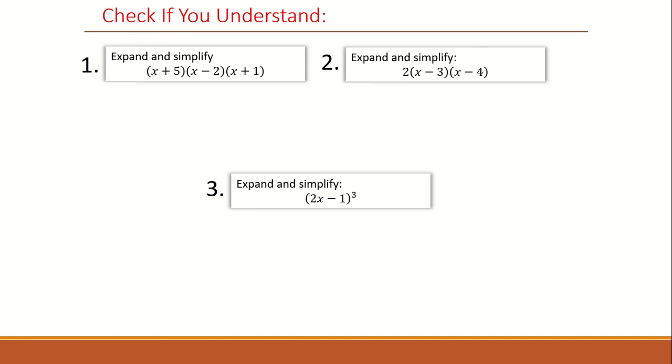For question one, do the exact same thing as you did in the last question on the last slide. So choose two brackets. In this case, I've chosen the last two and expanded them to get x squared minus 2x minus 2. Expanded the first bracket with the second bracket to get x cubed minus x squared minus 2x plus 5x squared minus 5x minus 10. Simplified it to get x cubed plus 4x squared minus 7x minus 10.